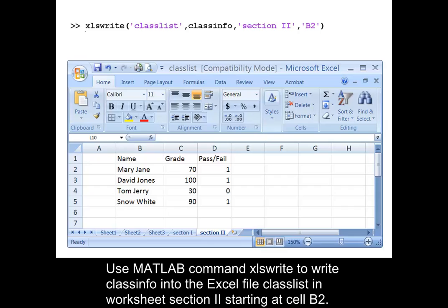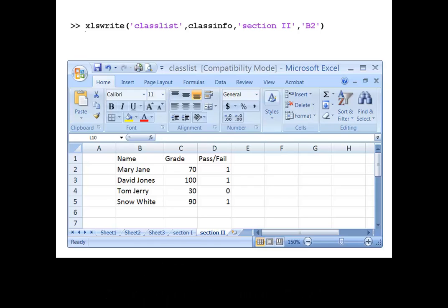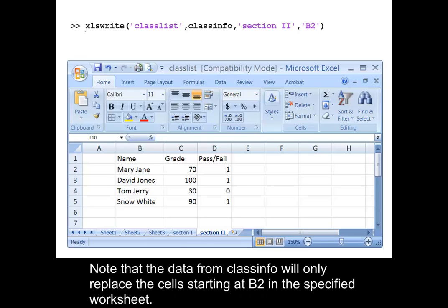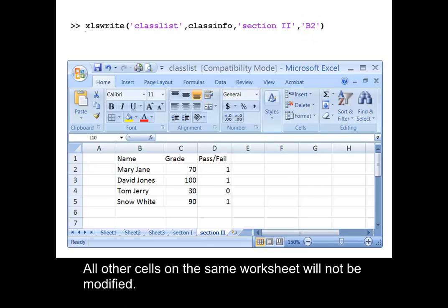Use MATLAB command xlswrite to write classinfo into the Excel file classlist in worksheet section 2 starting at cell B2. Note that the data from classinfo will only replace the cells starting at B2 in the specified worksheet. All other cells on the same worksheet will not be modified.